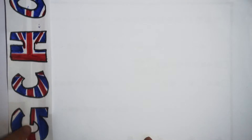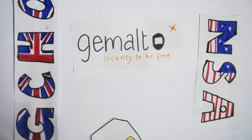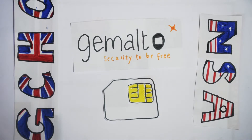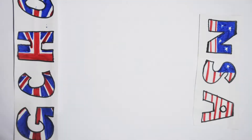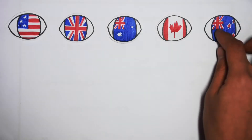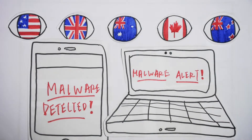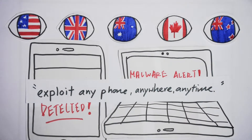Thirdly, the GCHQ and the NSA hacked into the private computer network of Gemalto, the largest manufacturer of SIM cards in the world. They have probably stolen, and are still stealing, some of the billions of encryption keys used to protect the privacy of mobile phone communications around the world. Last but not least, the Five Eyes have the ability to infect individual devices with intrusive malware in order to exploit any phone, anywhere, anytime.